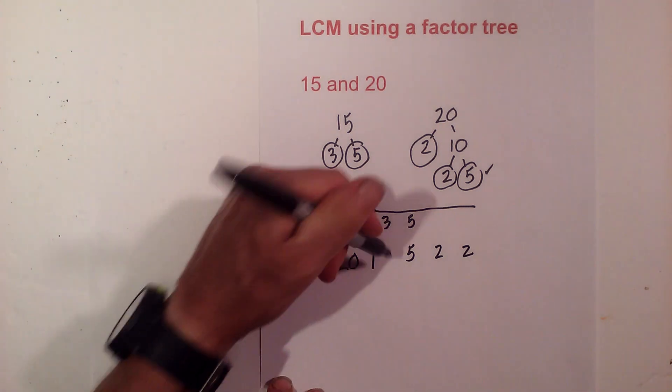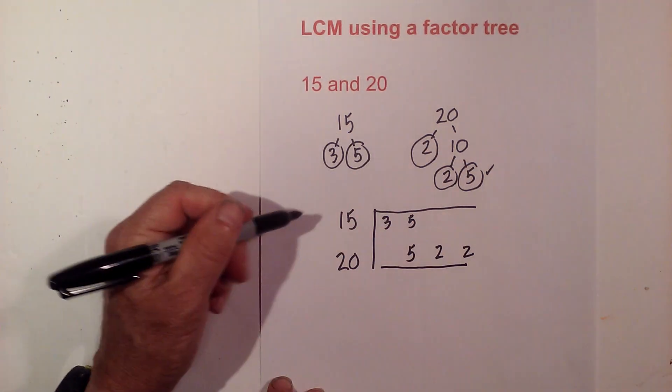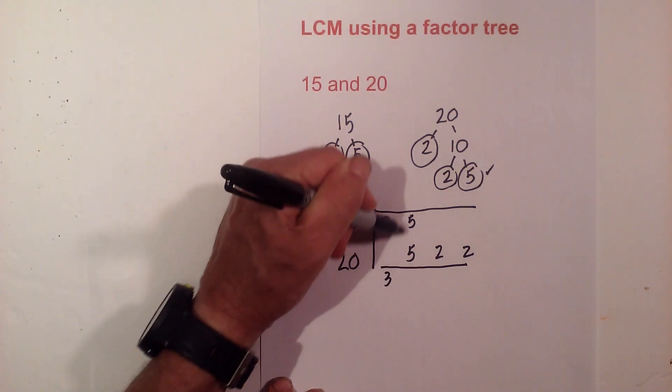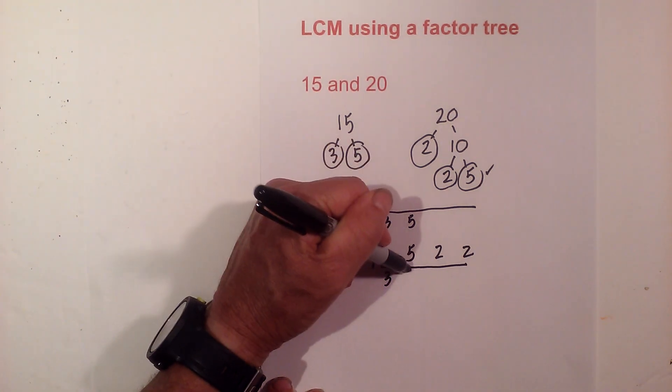Now all I do is multiply the prime numbers together and follow this rule: if I just have one number I bring it straight down, if I have a vertical pair I only use one.